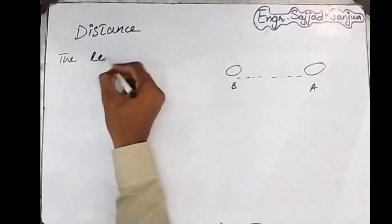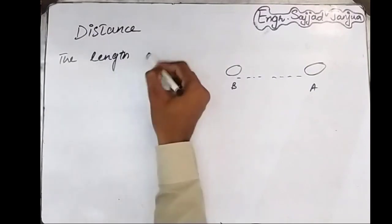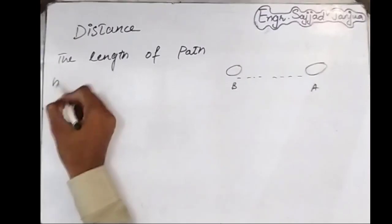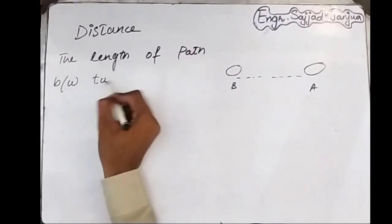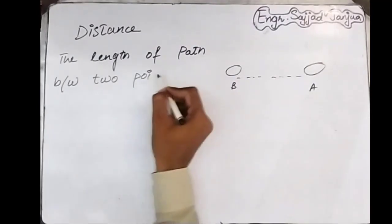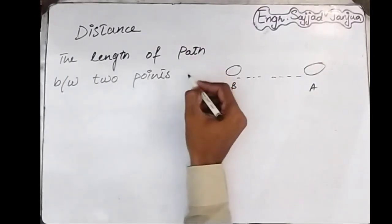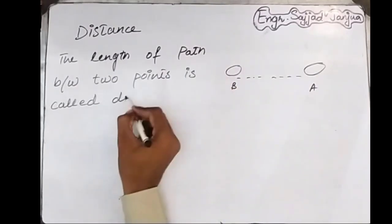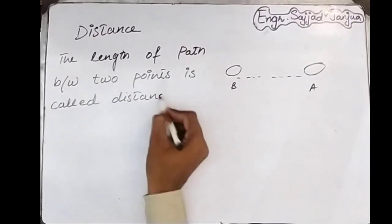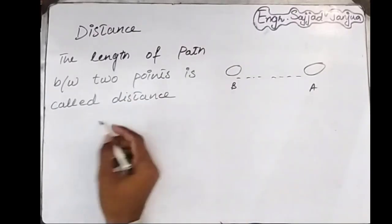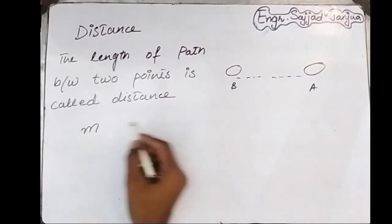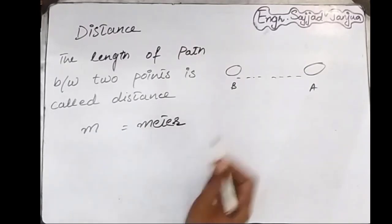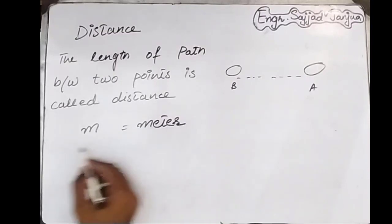The length of this path is the distance. Distance is measured in meters, so its unit is meter and it is a scalar quantity.